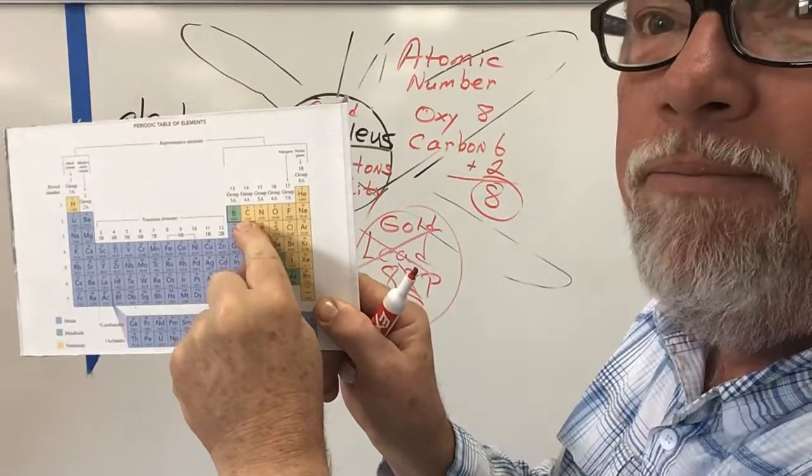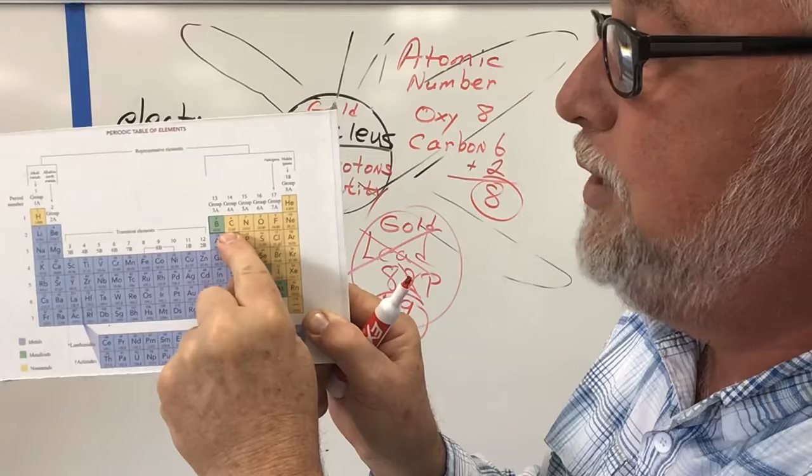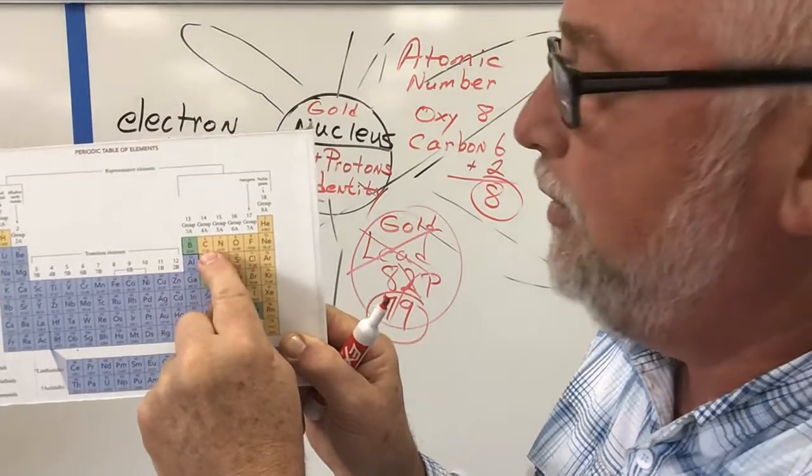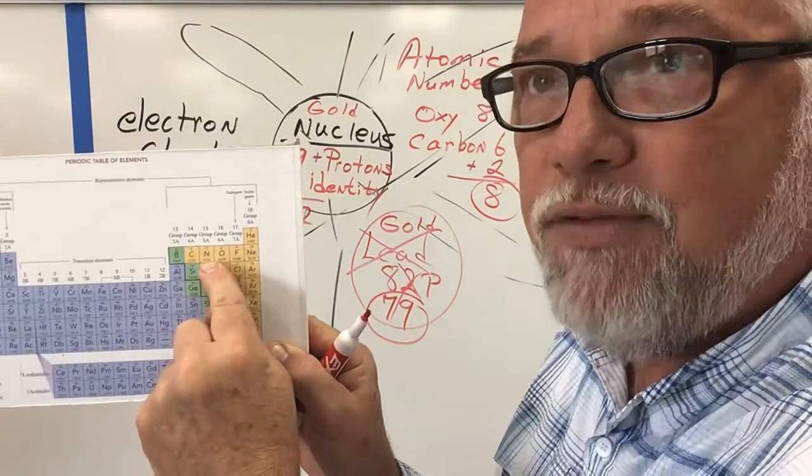If we take carbon, and we add one more proton to it, it's no longer a black powder, but now it's the gas nitrogen that's in our atmosphere.